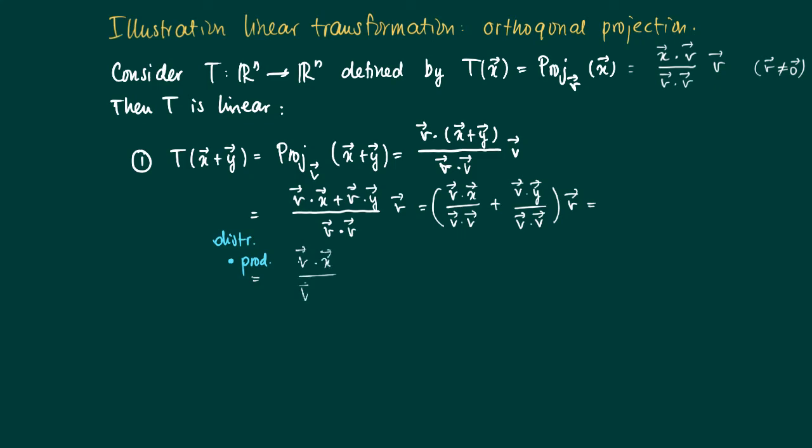This equals the first scalar times V plus the second scalar times V. Here you see we have a kind of linear structure because we recognize the image of X - the projection of X on V and the projection of Y on V.